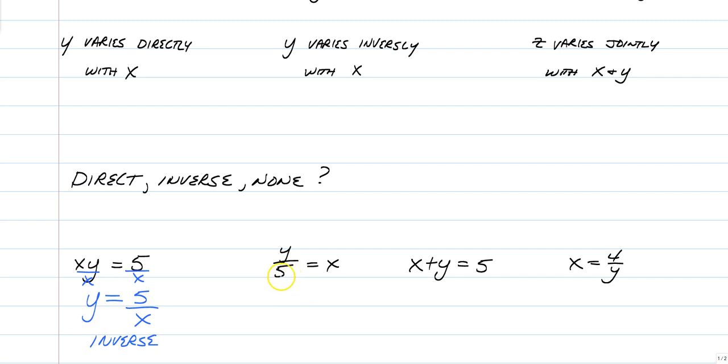And the second one, remember what I also said, K has to be in the numerator, not in the denominator. So we're going to multiply both sides by five, and we're going to have Y is equal to 5X. Five times X, or K times X is direct. This one is none because we didn't have any variations that had a plus or a minus sign in them, so that guy is none. And this one is also going to be inverse. Like I said, it doesn't matter if you have X or Y by itself. You could multiply both sides by Y, and that gives you XY equals 4. And then you divide both sides by X, and you still have Y is equal to 4 over X. So it doesn't matter. So that's how you identify with an equation if it's direct, inverse, or none.